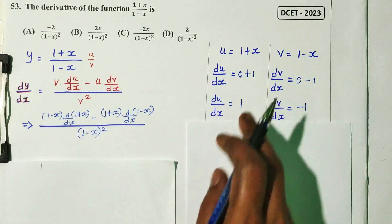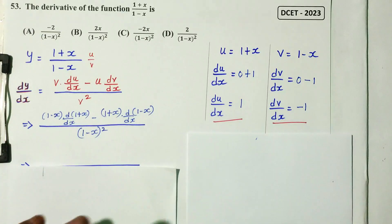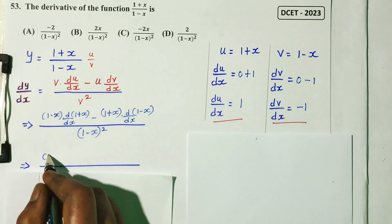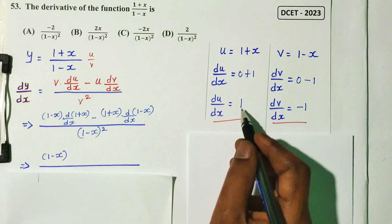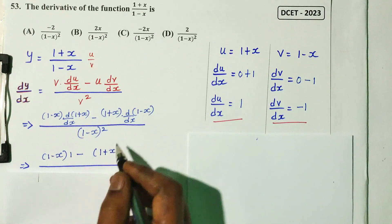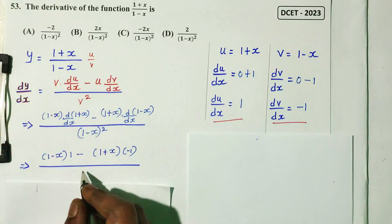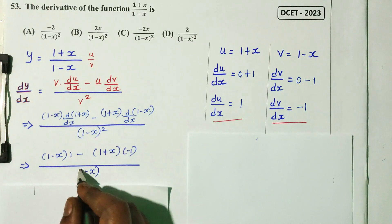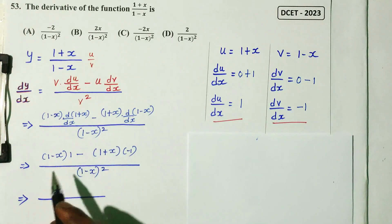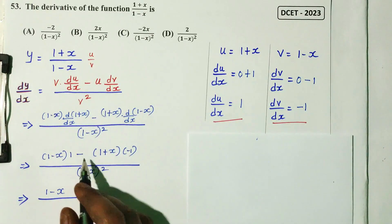Substituting into the quotient rule formula: (1 minus x) times 1 minus (1 plus x) times (minus 1), all over (1 minus x) squared. Expanding the numerator: 1 minus x, then minus into minus gives plus, so plus (1 plus x).